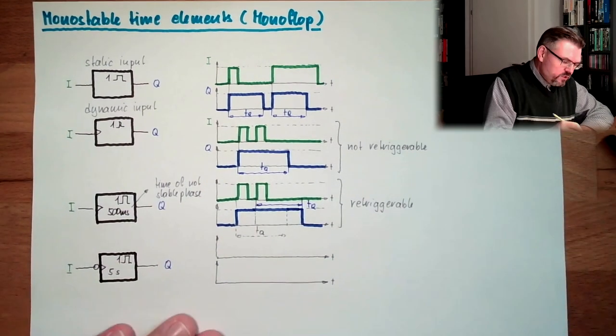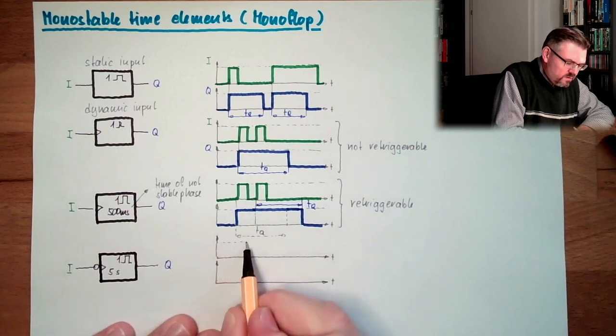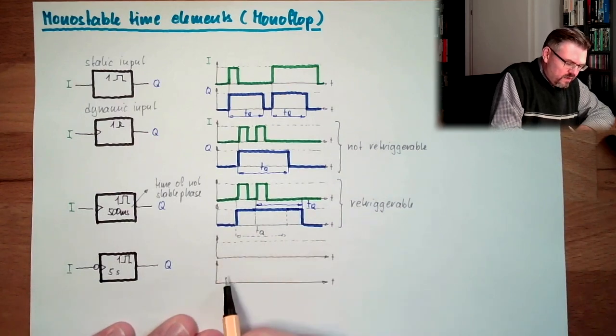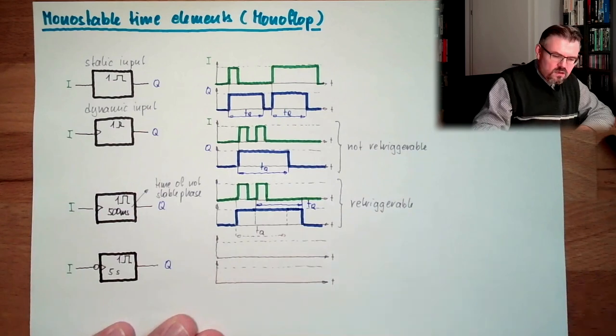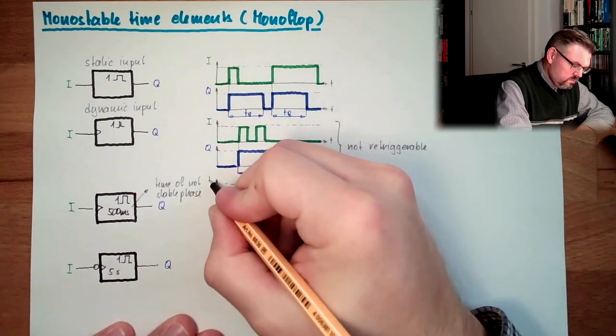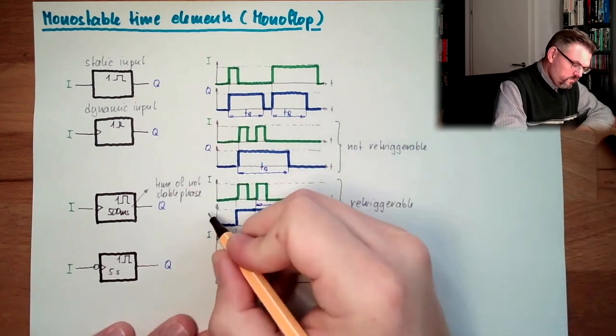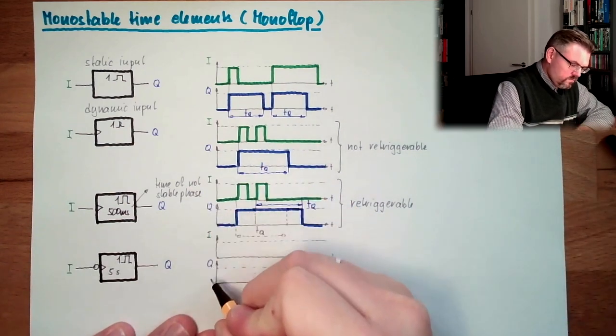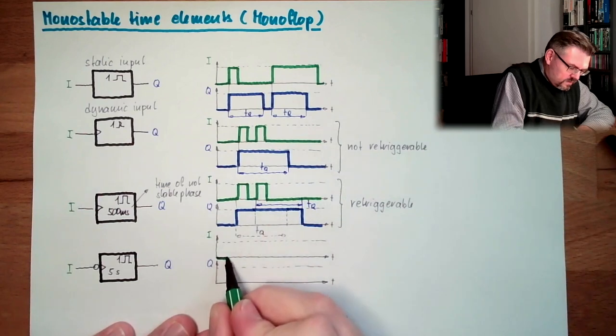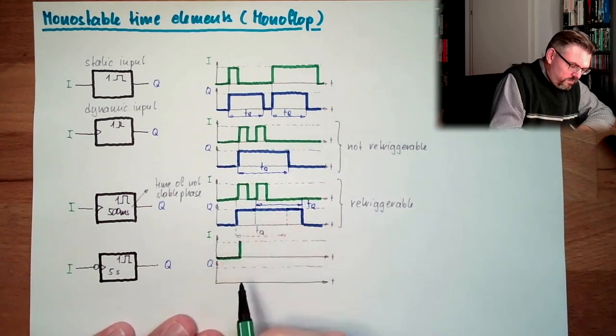So if we have again here i and again here q. If we have here impulse, dropping, then the output would change with the falling edge here.